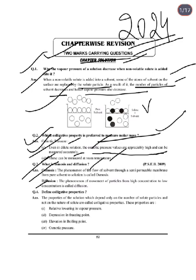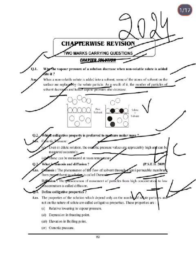Next question: What is the difference between osmosis and diffusion? Osmosis is the phenomenon of flow of a solvent through a semi-permeable membrane from pure solvent to the solution. Diffusion is the phenomenon of movement of particles from high concentration to low concentration. In osmosis, the solvent flows from low to high concentration, while in diffusion, solute particles move from high to low concentration.